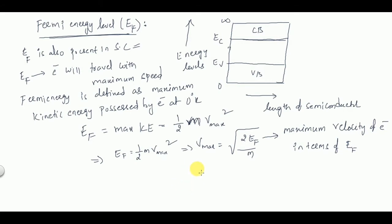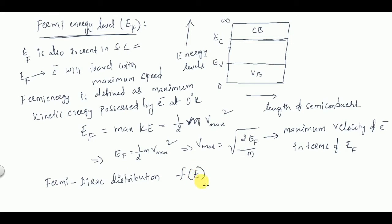To find the position of the Fermi energy level, we consider the Fermi-Dirac distribution, given by two scientists — Fermi and Dirac. The Fermi-Dirac distribution function of energy levels is: f(E) = 1 / (1 + e^((E - E_F) / kT)).